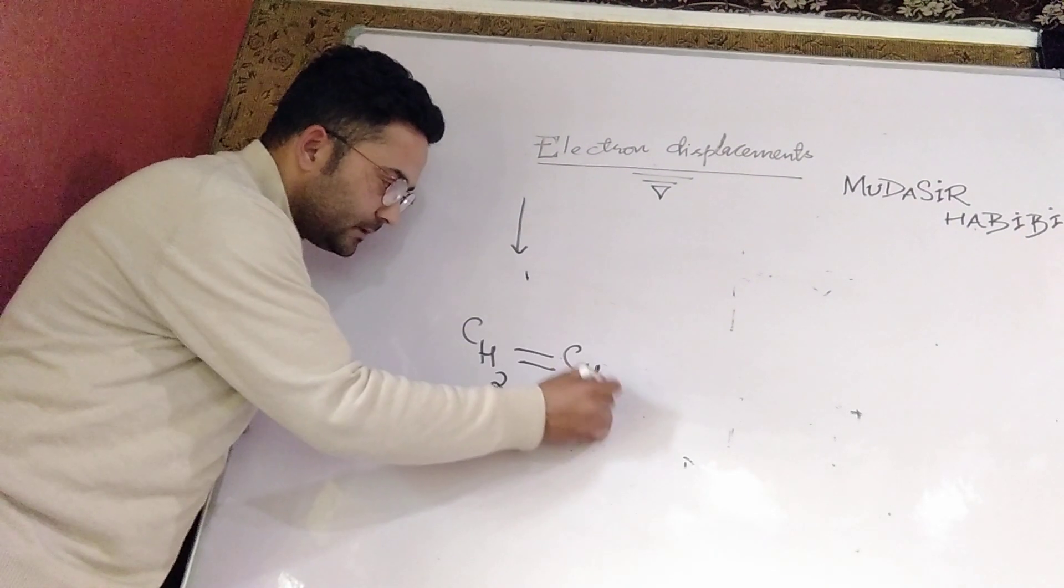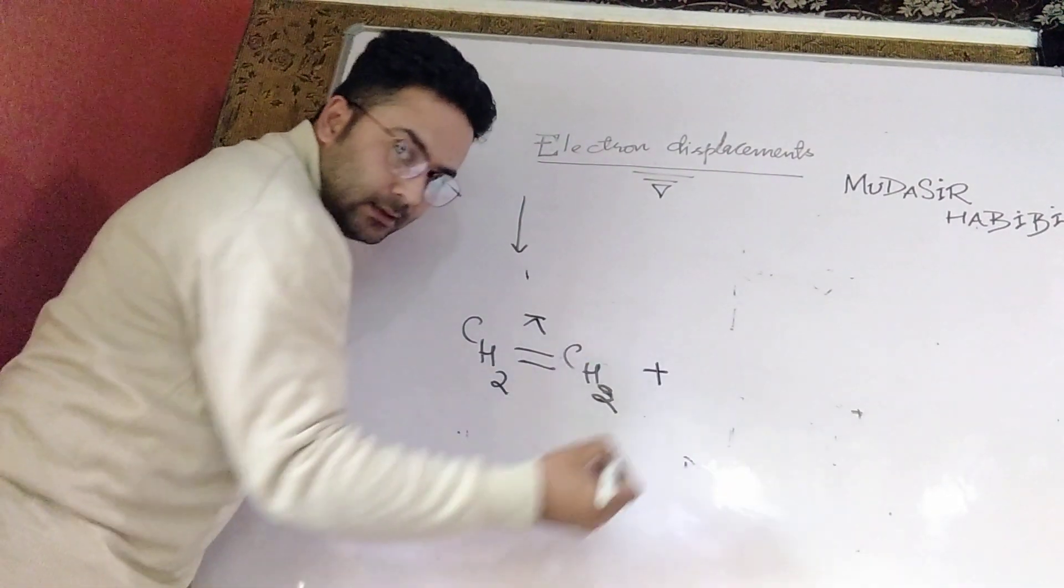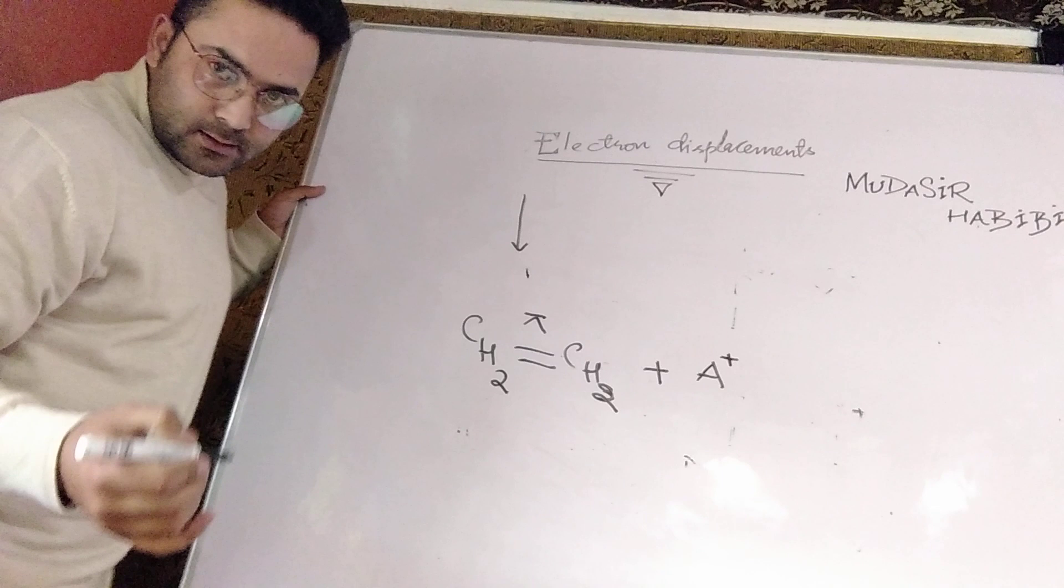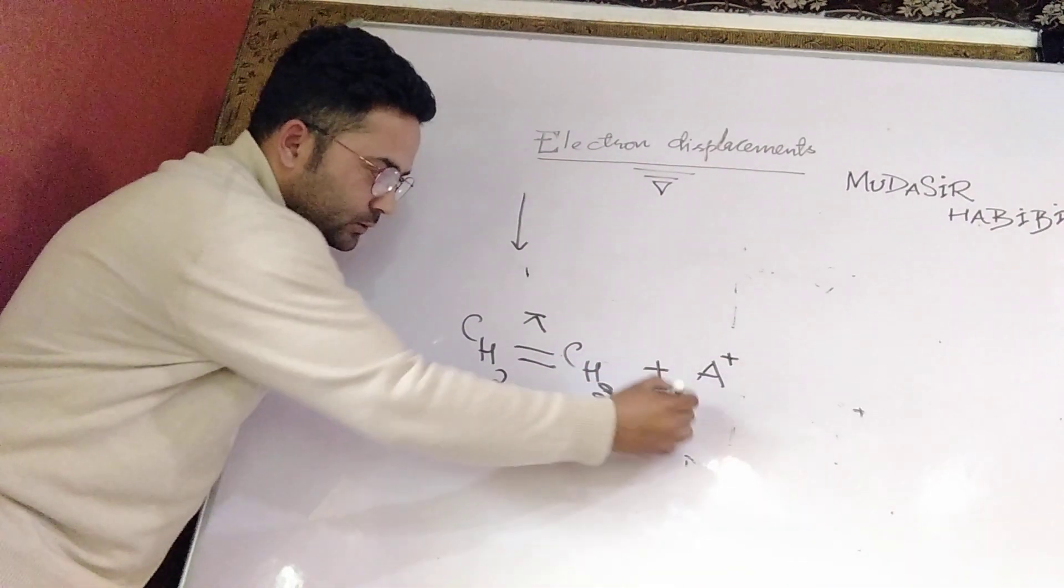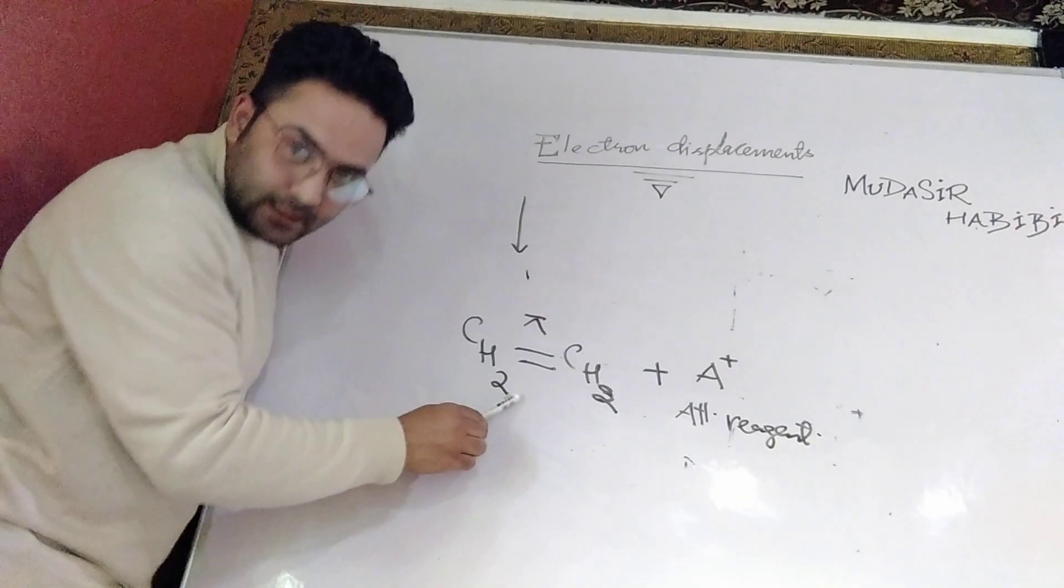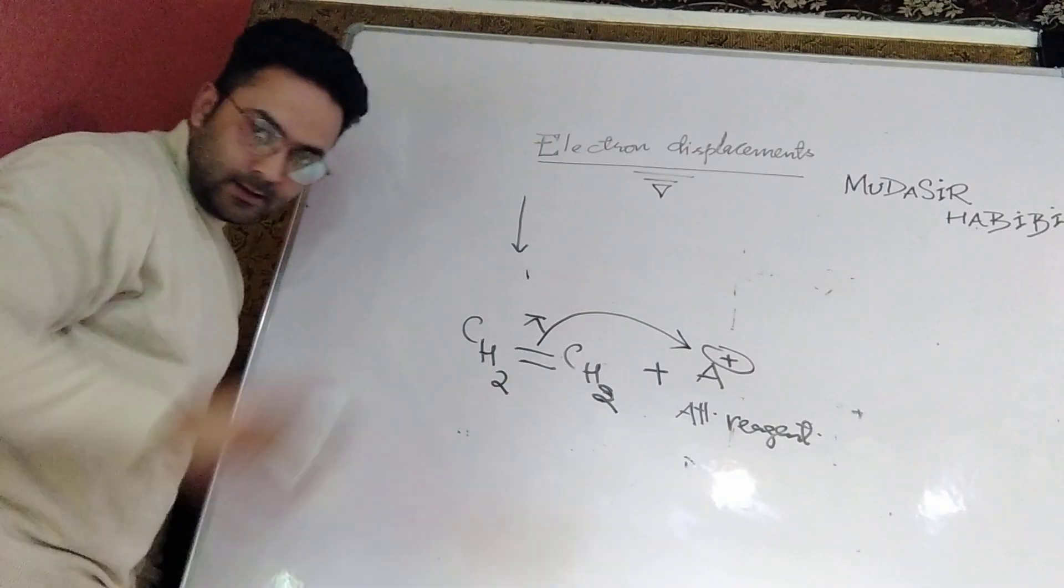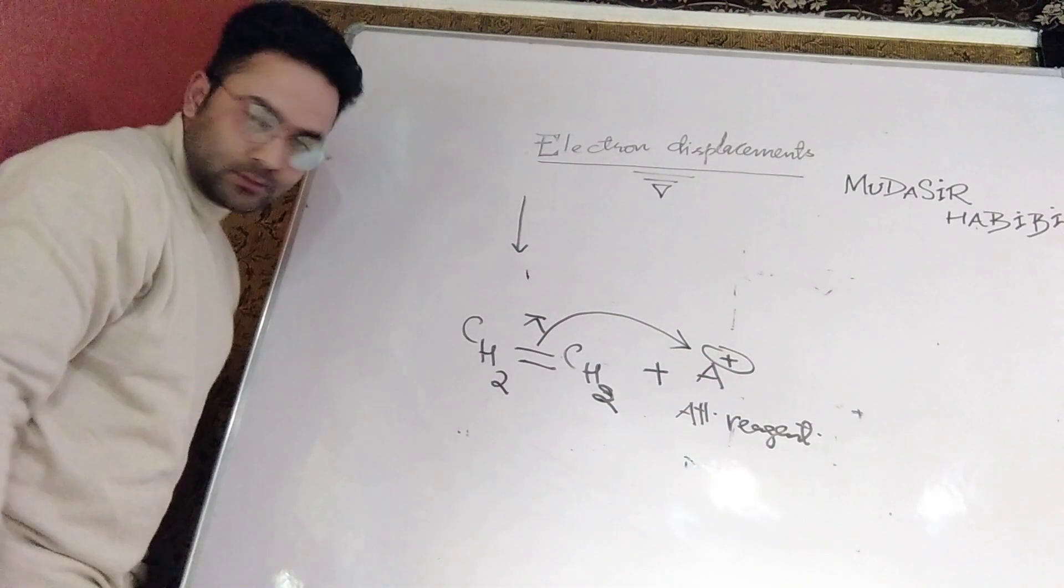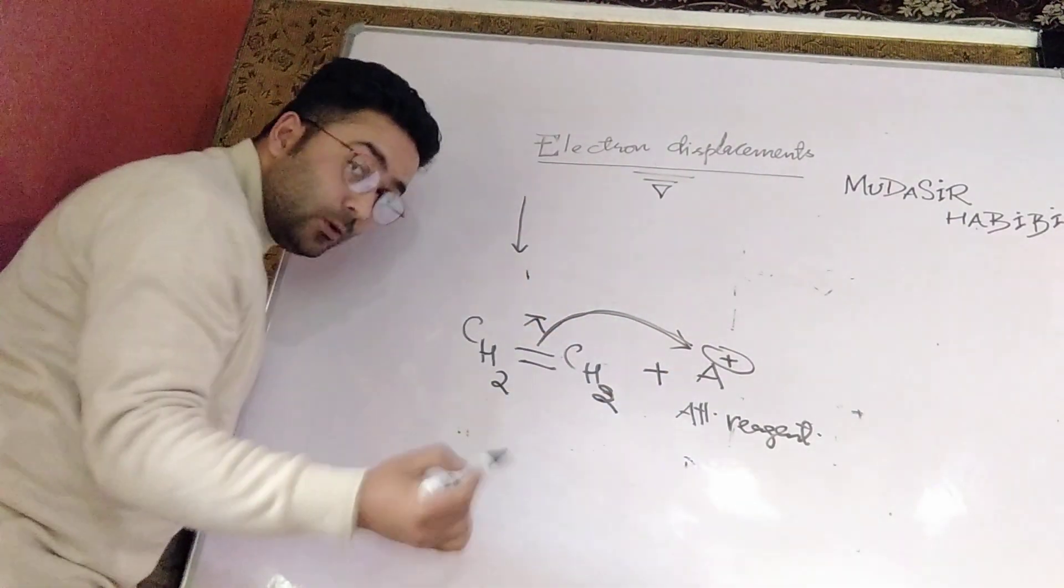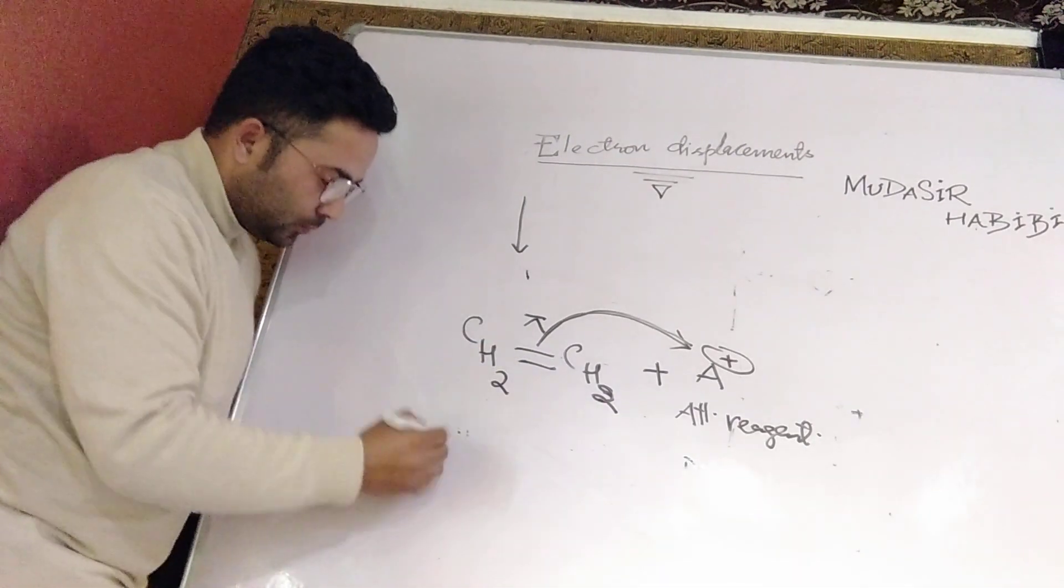The second case is if we have an organic compound which contains a multiple bond, double or triple bond. For example, I am taking ethene. If we add any attacking reagent to this ethene, like A-positive, which is electron deficient, when the attacking reagent attacks the alkene compound, being electron deficient, this A-positive will attract the pi bond electrons. It will keep them on its own because it is more electron deficient. So this pi bond shifts. The moment of electron is happening.